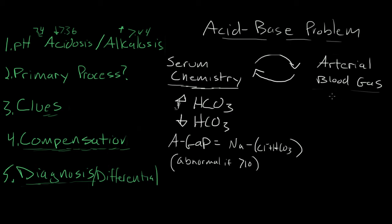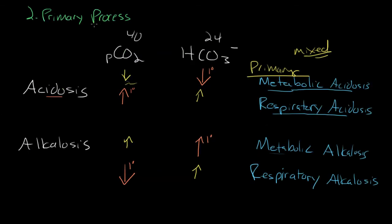Let's walk through our step process. The very first thing is we need to get an ABG and determine our pH — that's step number one. For step number two, determining the primary process requires you to look at some patterns. You need to know three things: your PCO2 values, your bicarbonate values, and your pH to know if you have an acidosis or an alkalosis.